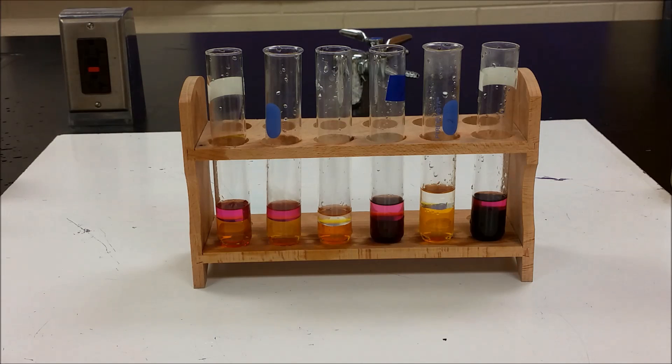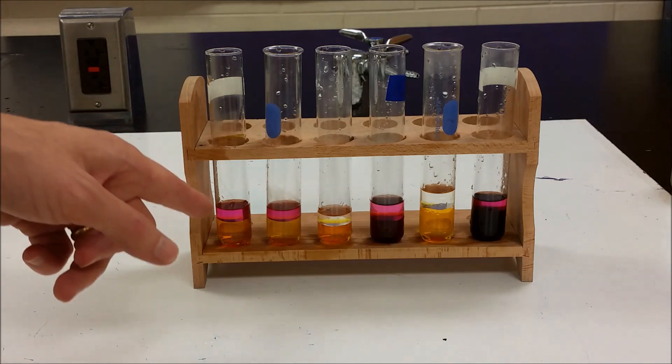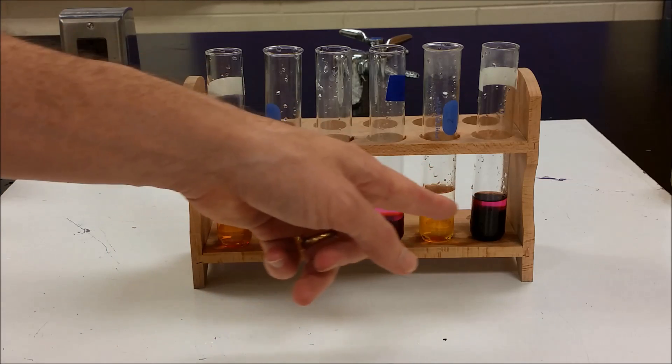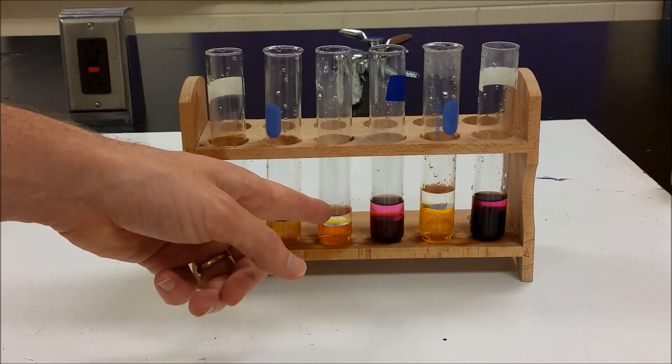Anytime we started with chlorine, it reacted to form chloride. That also means that the iodine is the least reactive because the iodine doesn't react with anything. Now bromine is kind of the intermediate.